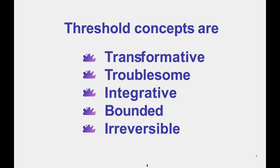This links into the second characteristic, which is troublesome. Often when you've learnt something, you may have to unlearn a previous piece of knowledge in order to acquire it — hence the learning process can be quite troublesome. Anything that requires us to change or transform can be troublesome, because many people are quite resistant to change, particularly when it's difficult.